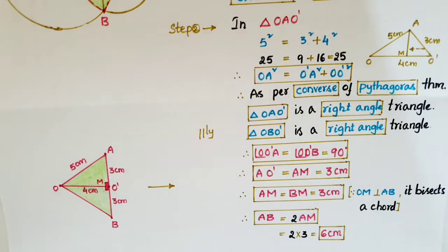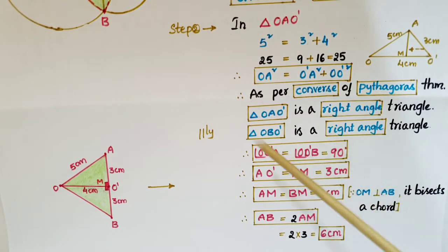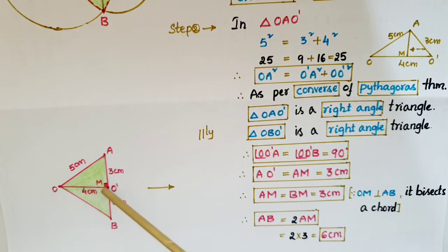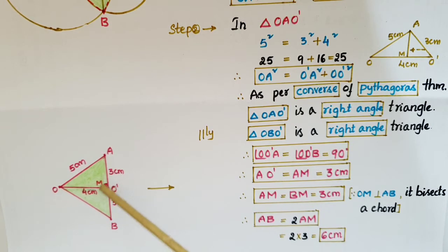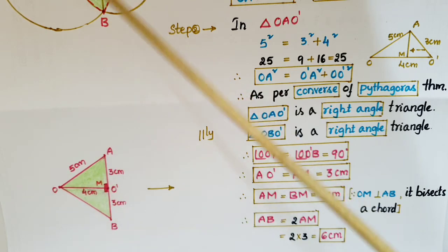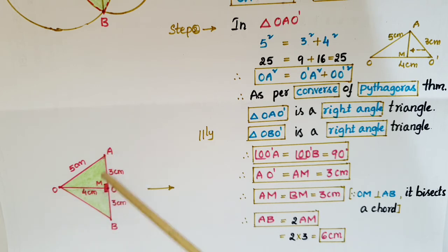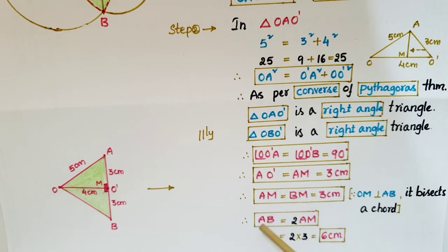AM is equal to BM is equal to 3 centimeters, because this is a perpendicular line — since these two angles are 90 degrees, a perpendicular line drawn from the center of the circle to the chord AB divides the chord into two equal parts. So AM equals BM equals 3 centimeters. Therefore AB is equal to twice AM, that is 2 times 3, which is 6 centimeters.